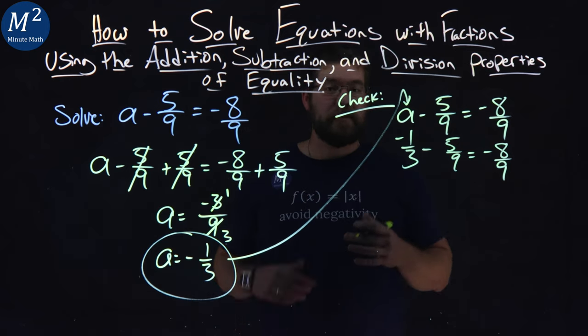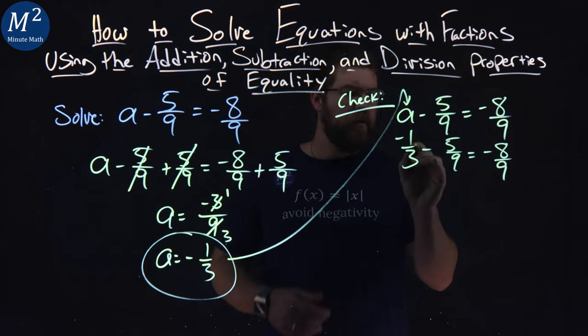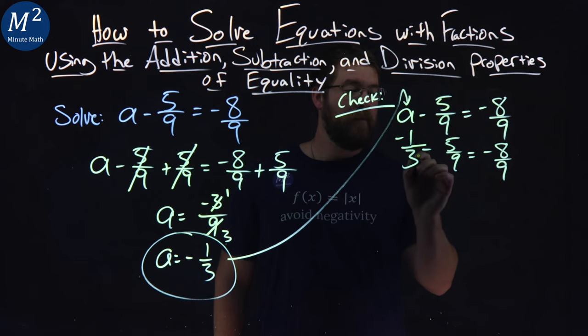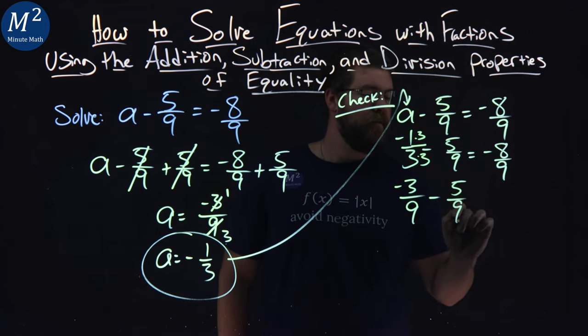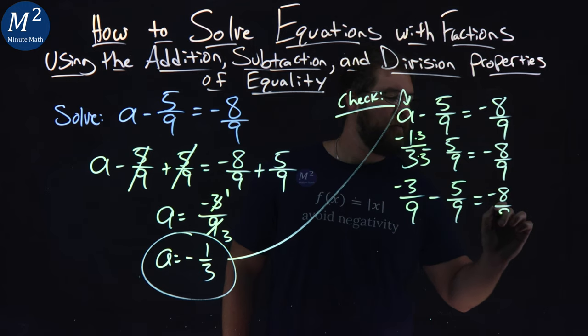Well, to subtract fractions, we have to have a common denominator. 3 turns into 9 if we multiply it by 3, so let's do that to the numerator. Negative 1 times 3 is negative 3 over 3 times 3 is 9, minus 5/9 equals negative 8/9.